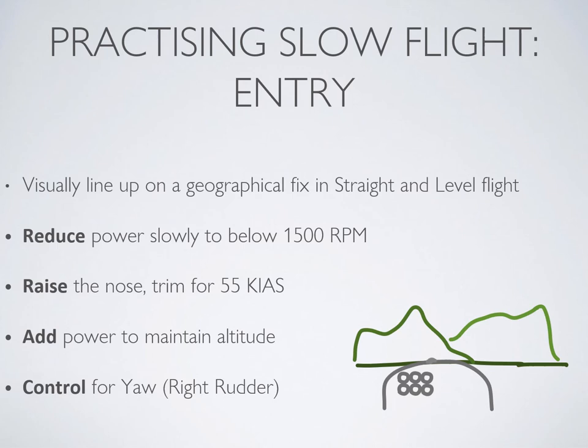Safety check completed. First things first, pick a geographical fix — something straight ahead of you, preferably high up like a mountaintop or a cloud that's not moving. This will help you keep the aircraft straight during the maneuver without relying on your instruments. Next, carb heat out and reduce power to about 1400 RPM, catch that nose drop and yaw, and slowly begin raising the nose as you feel the aircraft begin to slow down. This gives you a nice transition to slow flight without gaining altitude.